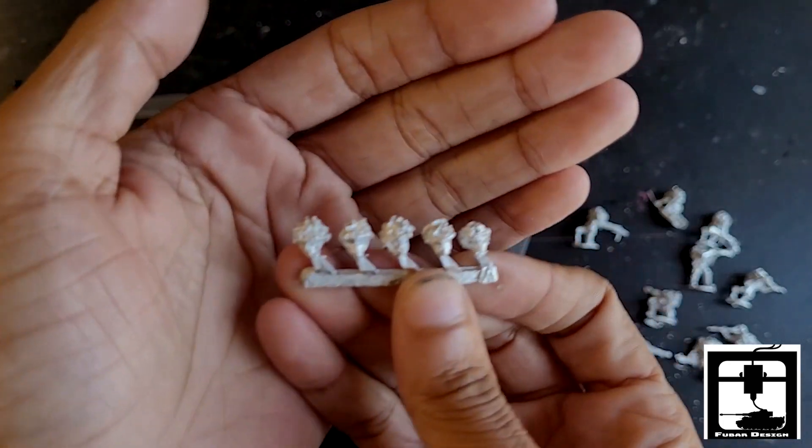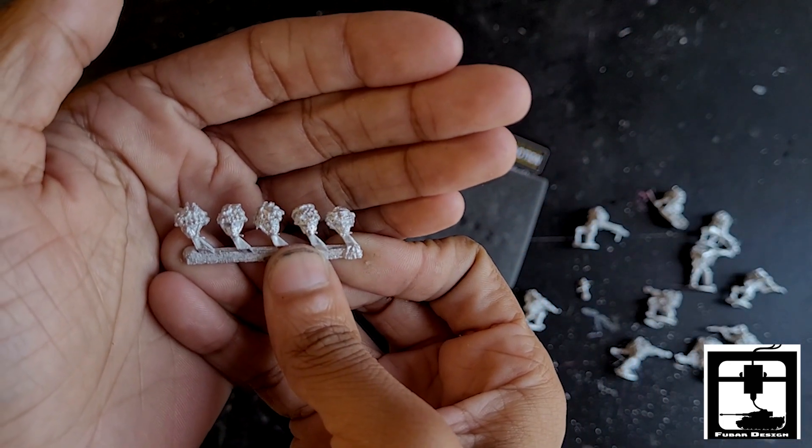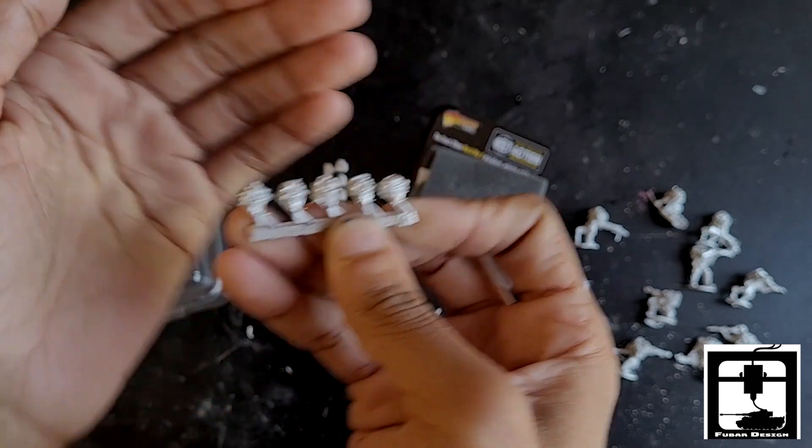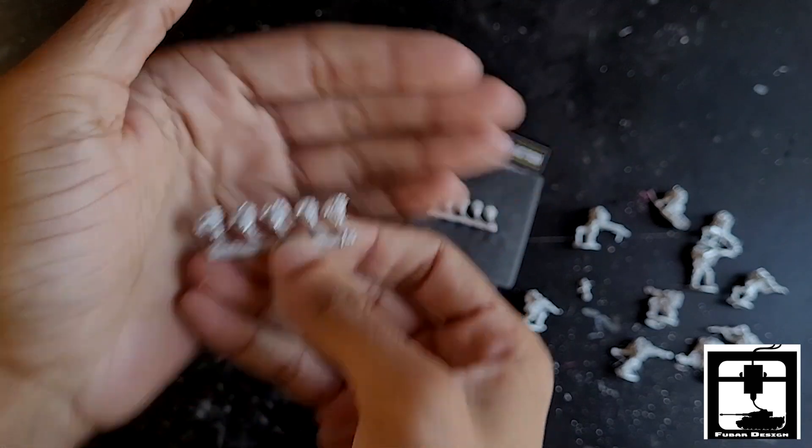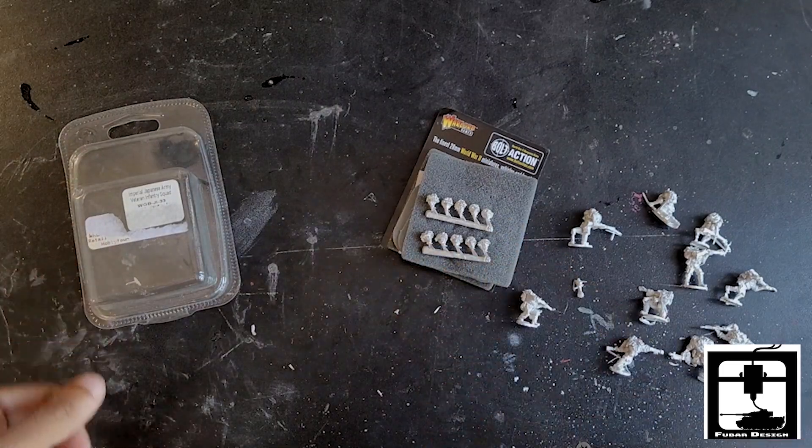And then we get to the heads—all normal Japanese helmets with the foliage and netting going through them. You get two sets of these. That's all for today. Thank you guys for coming on by.